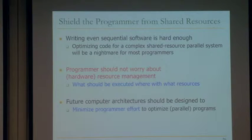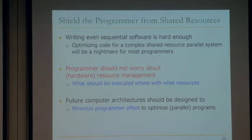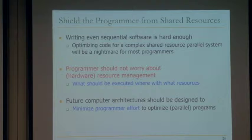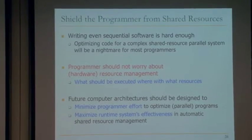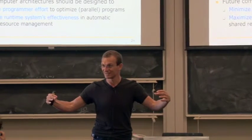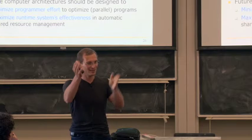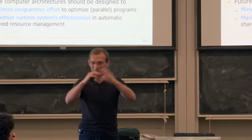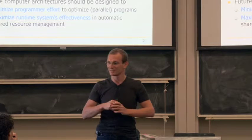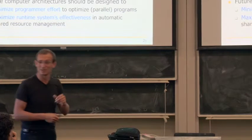The future computer architecture should be designed to minimize programmer effort to optimize parallel programs. But somebody needs to do this management — it should be handled automatically by a runtime system, or some library-based runtime system that gives a virtualization layer. The programmer writes programs; between the hardware and the program you have a runtime system or hypervisor that maps programs and data to the underlying resources. That resource could be anything — you could imagine your program running on a cell phone and the runtime system deciding to ship part of it to the cloud.